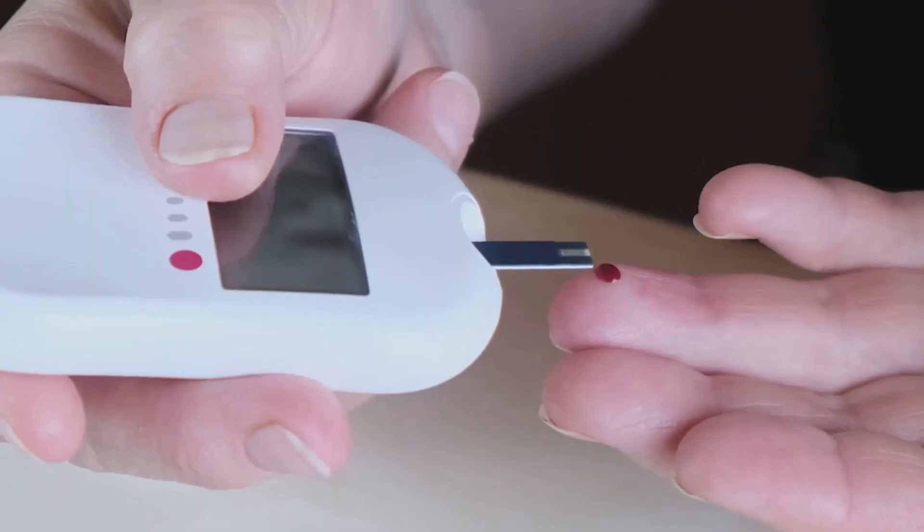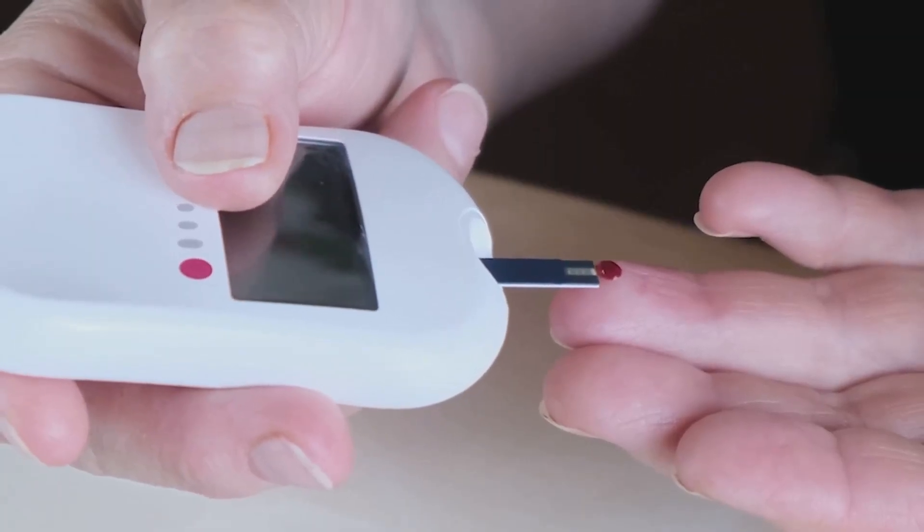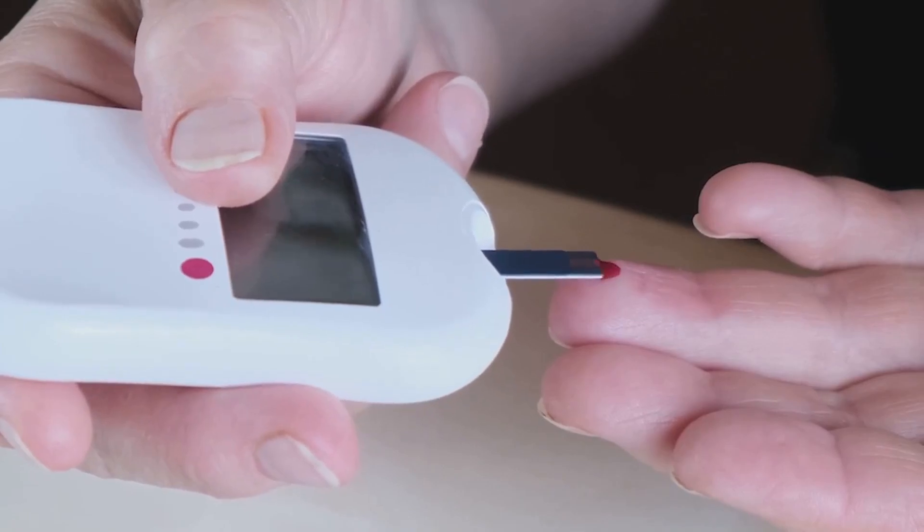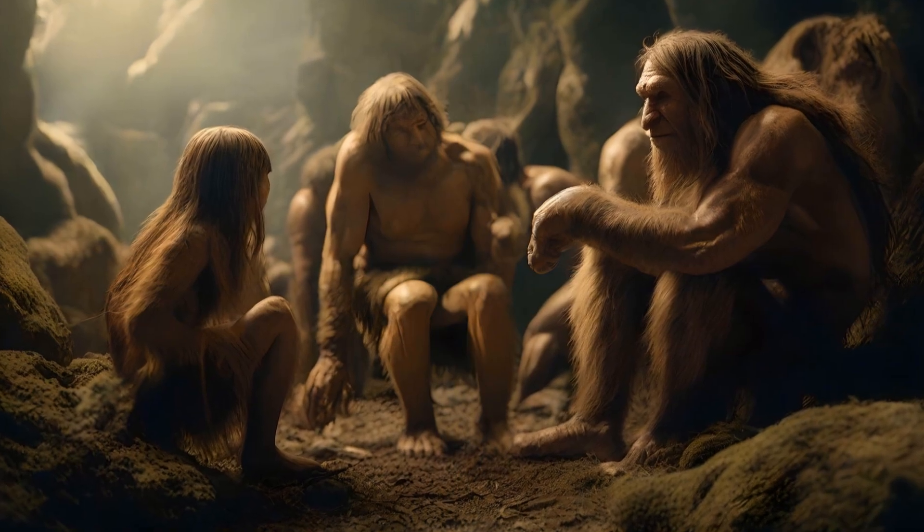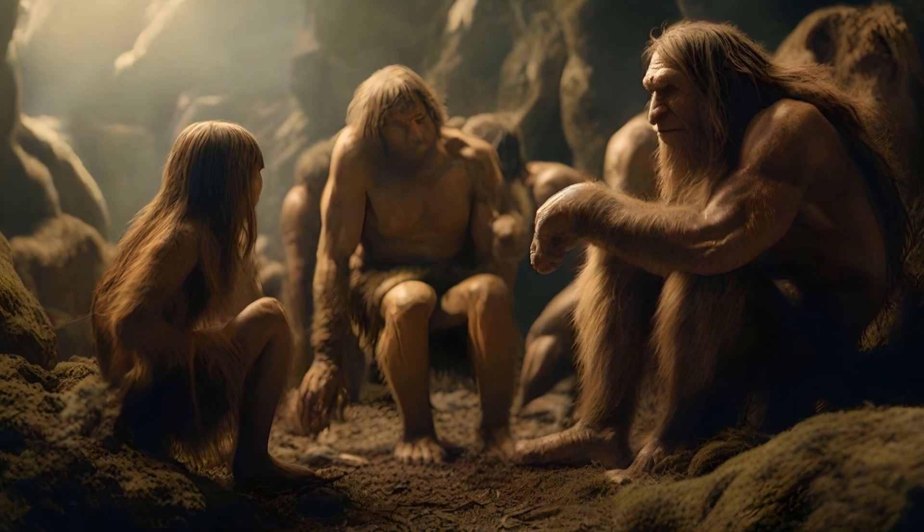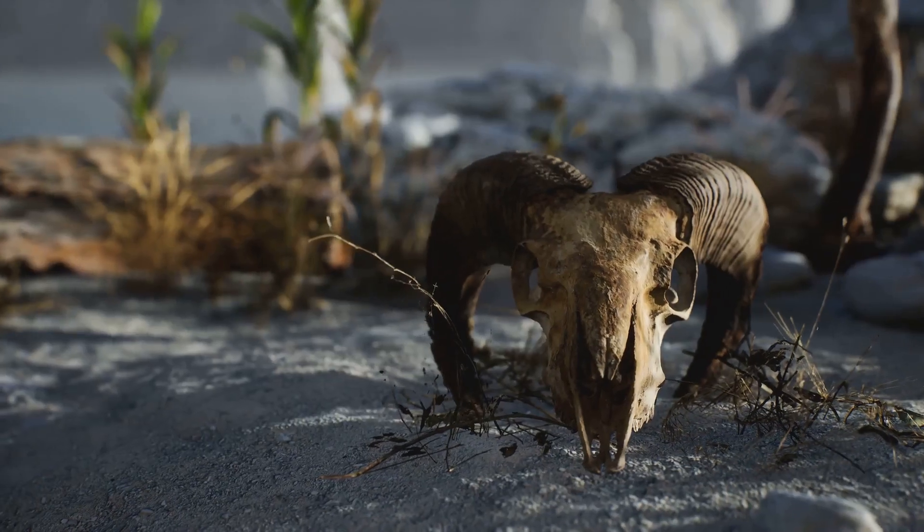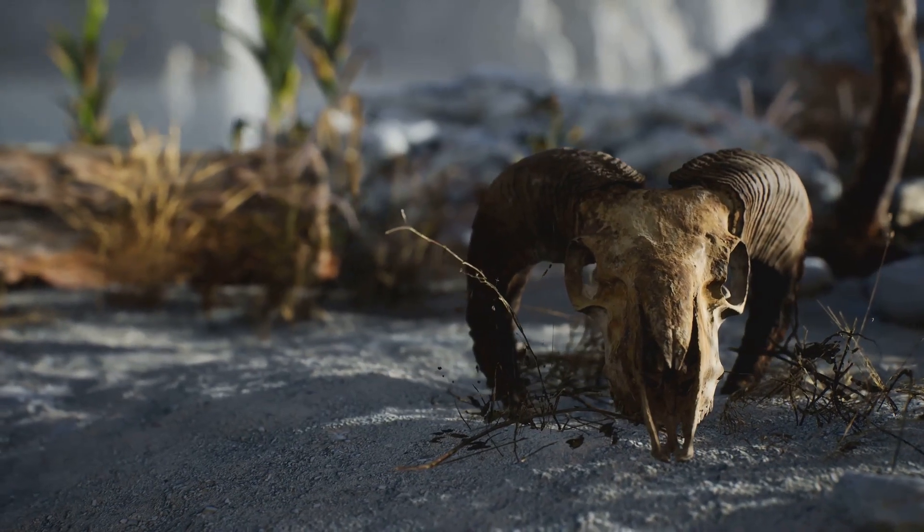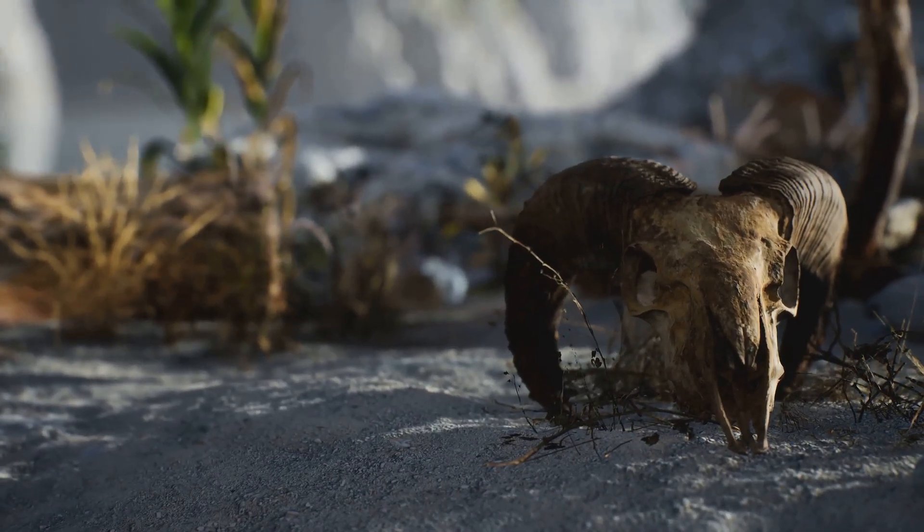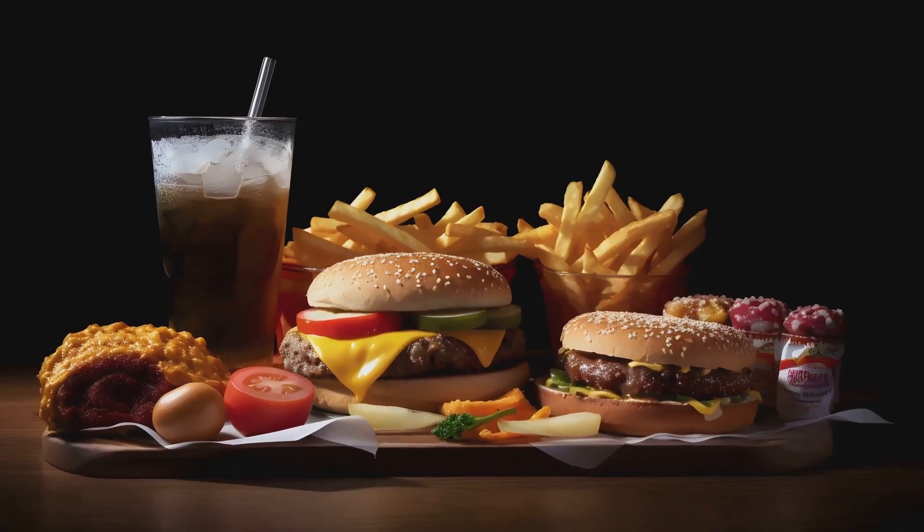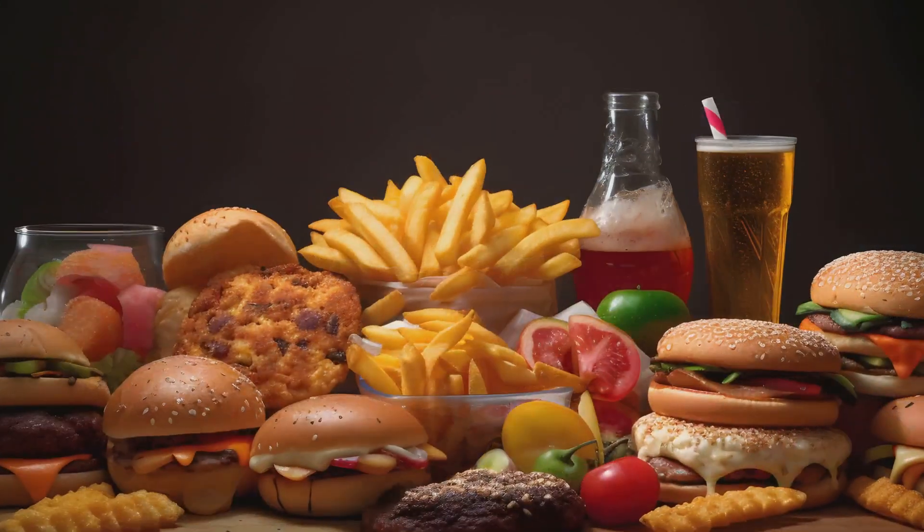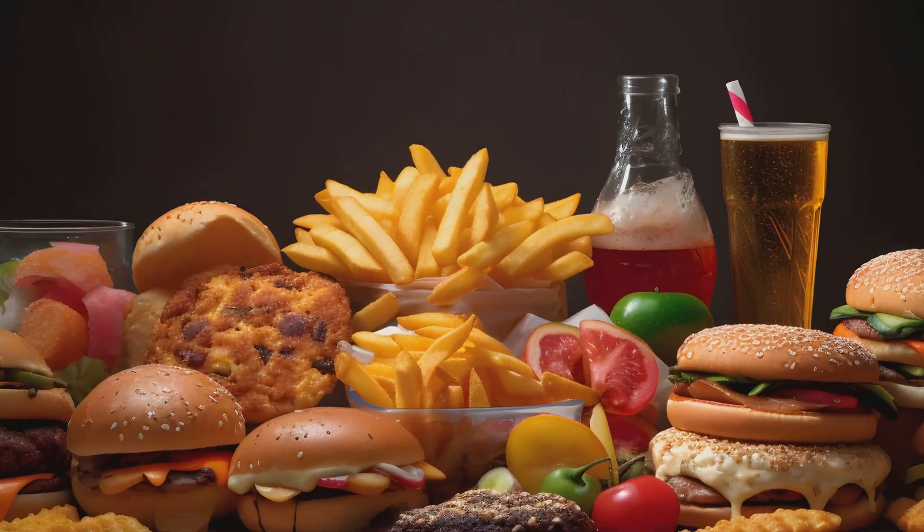But why would a gene associated with diabetes be passed down and remain in the modern human population? In an evolutionary context, this gene likely had benefits in the past. It's thought that the SLC16A11 variant helped early humans store fat more efficiently, an advantage during times of food scarcity. Today, in a world of abundant calories and western lifestyles, this same adaptation may inadvertently contribute to metabolic diseases.